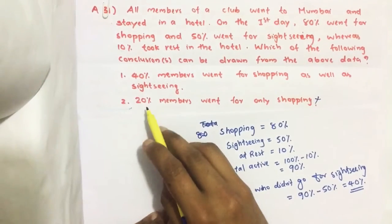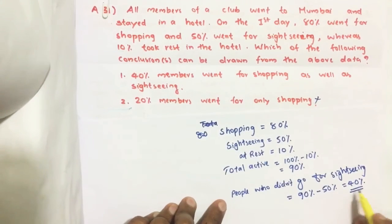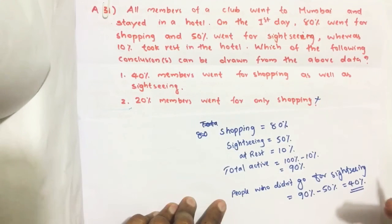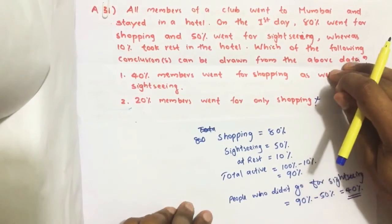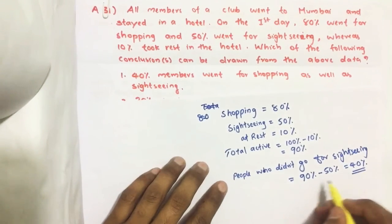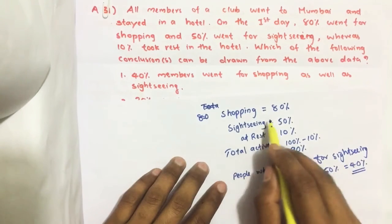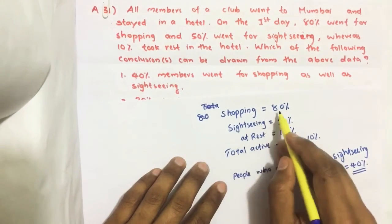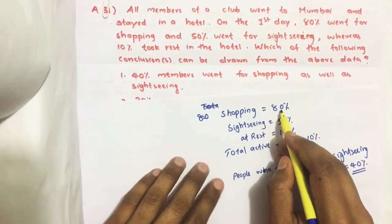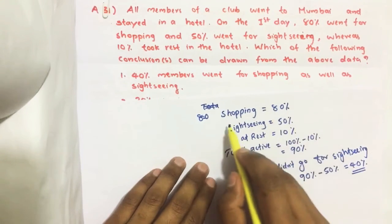So statement 2 is wrong. It states that 20% went for only shopping, but we calculated that at least 40% of the active people went for only shopping. So what about the other 40% of people who went for shopping?